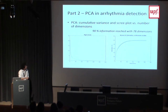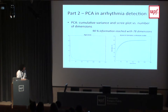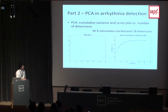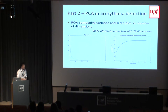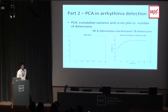Looking at the cumulative variance plot, 90% of the information is reached with around 70–80 dimensions. As we can see in this plot, at approximately 8 iterations we already reach 90%. We reached a plateau, and since the plot is normalized we eventually reach 100%, but with higher dimensions there is very little additional information — we reach the total information even with a lower-dimensional representation.